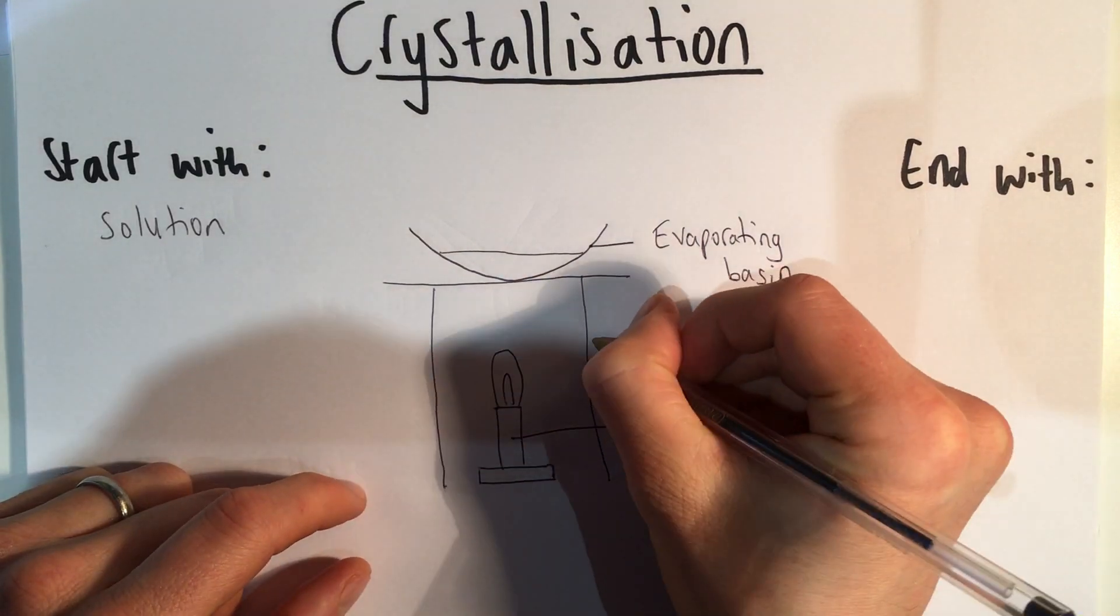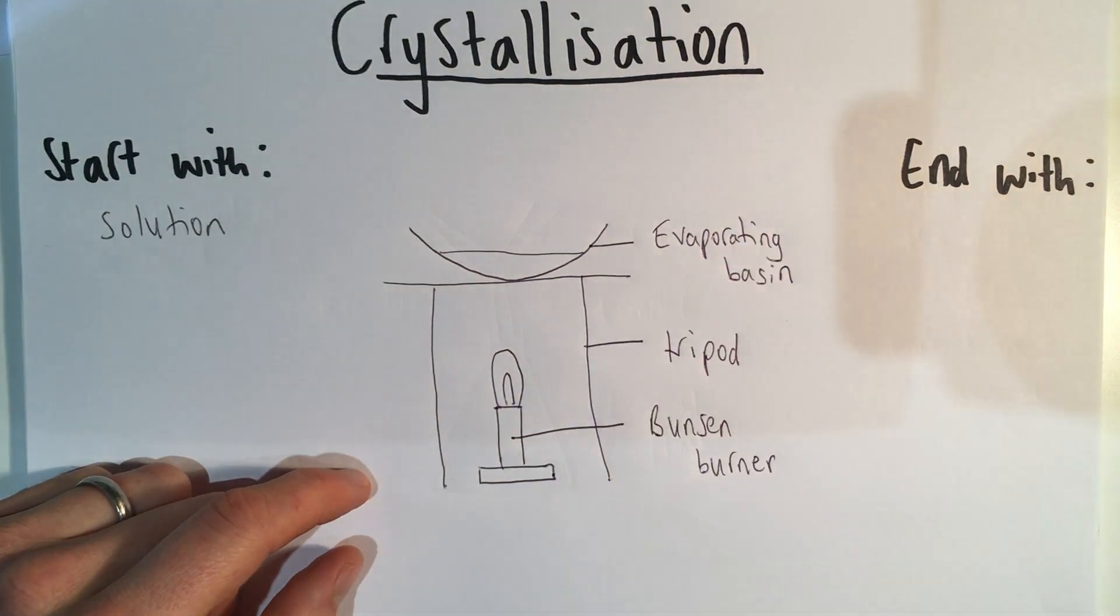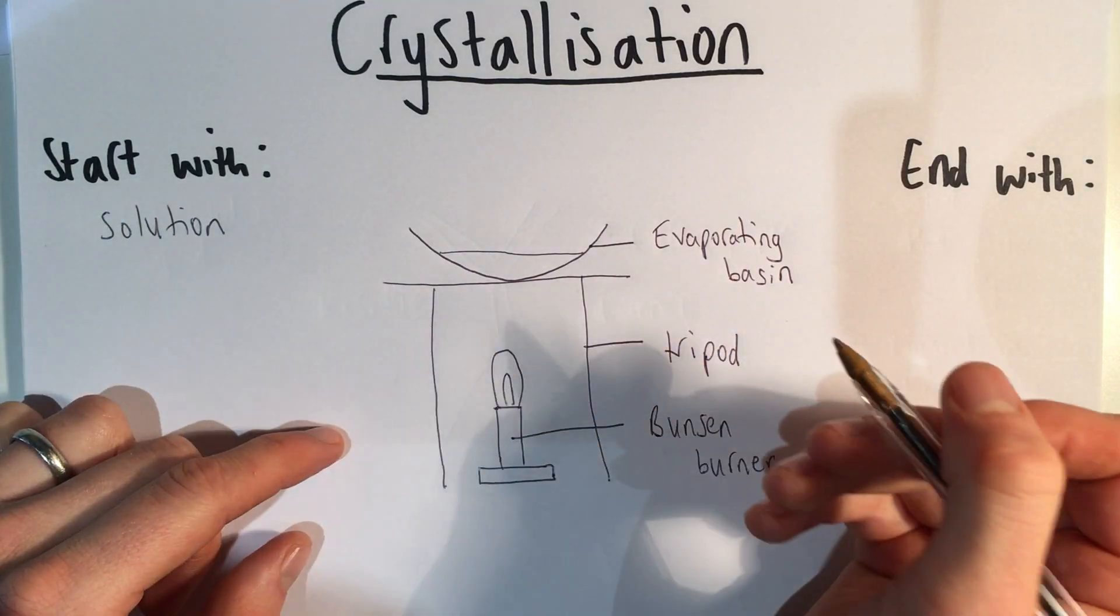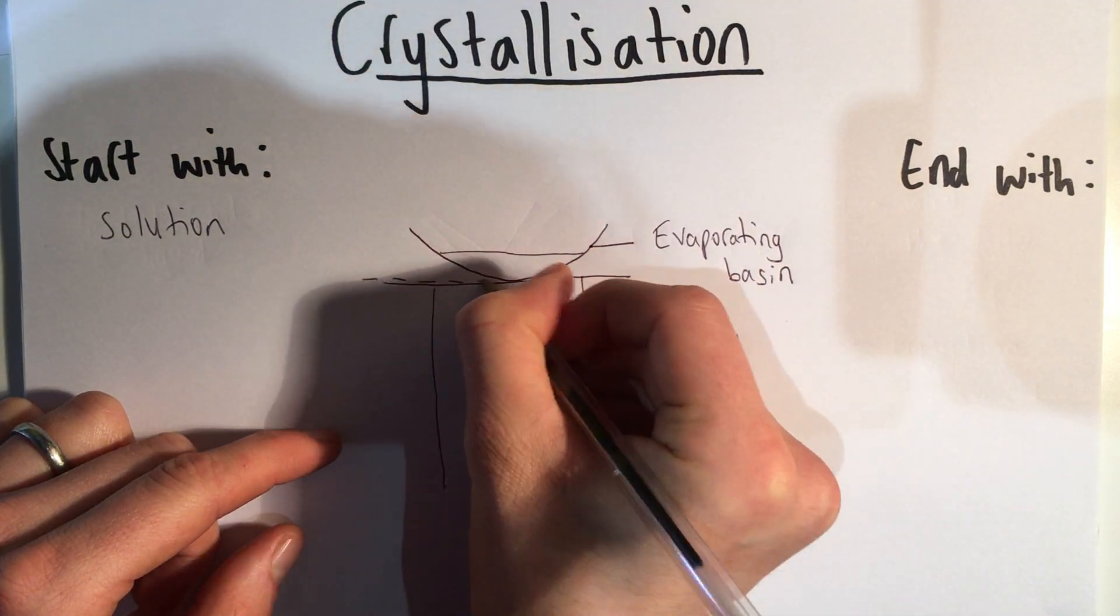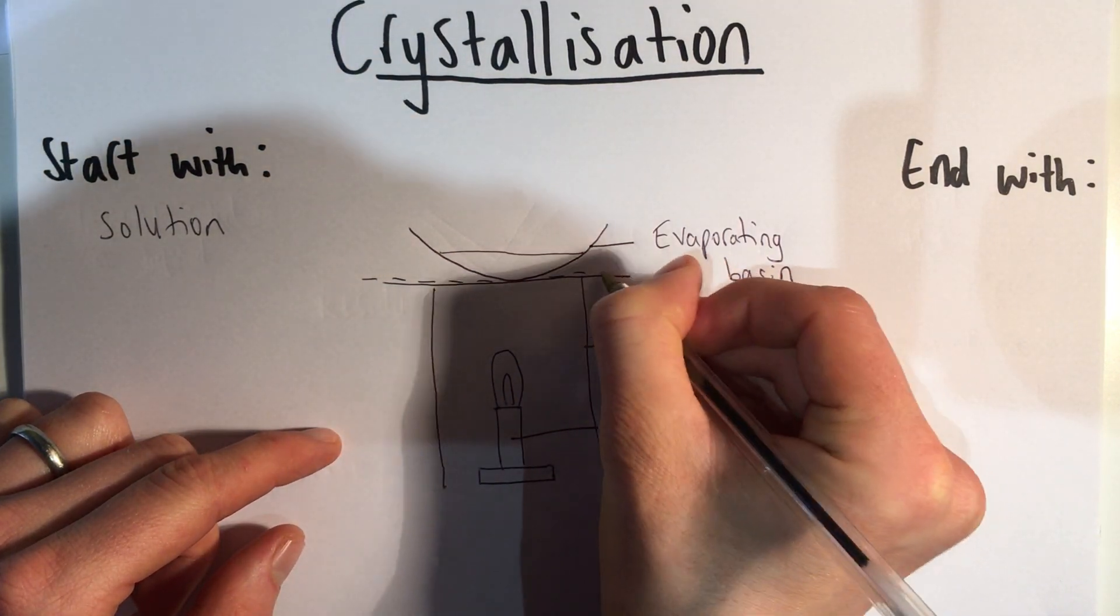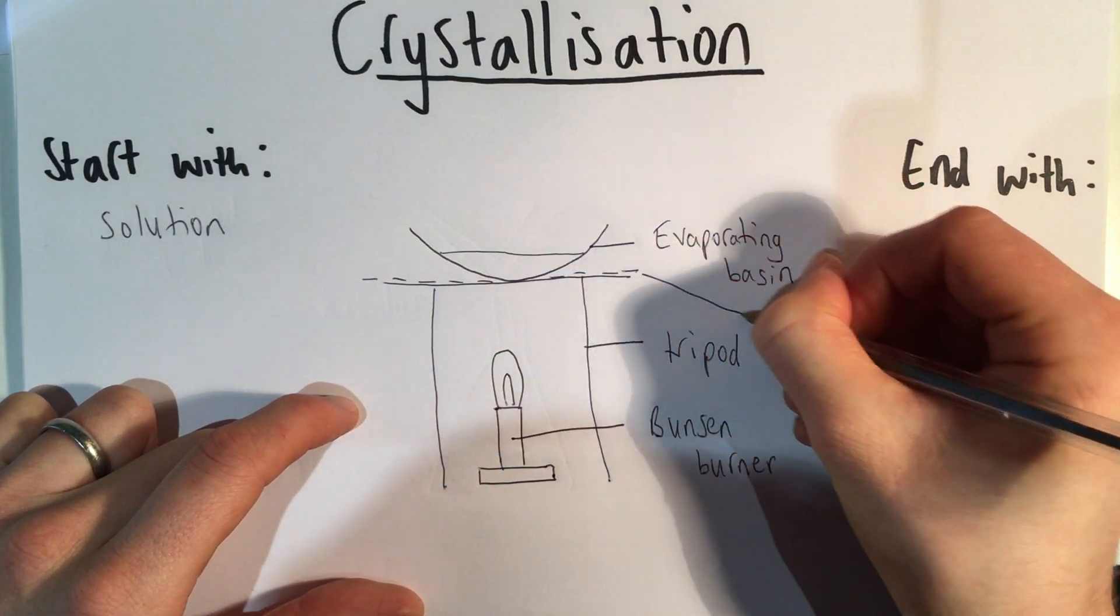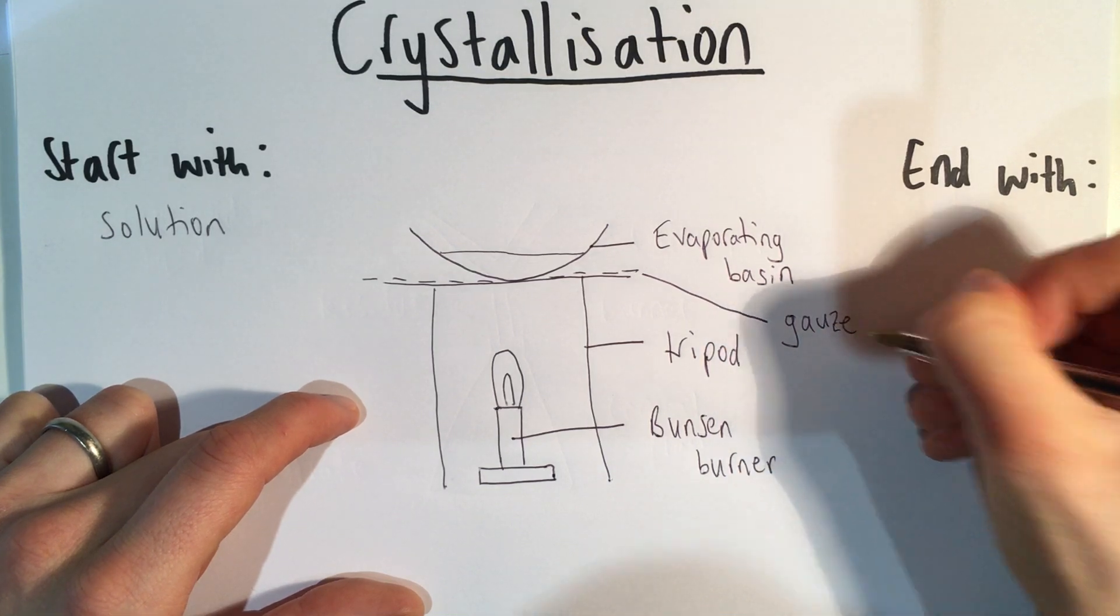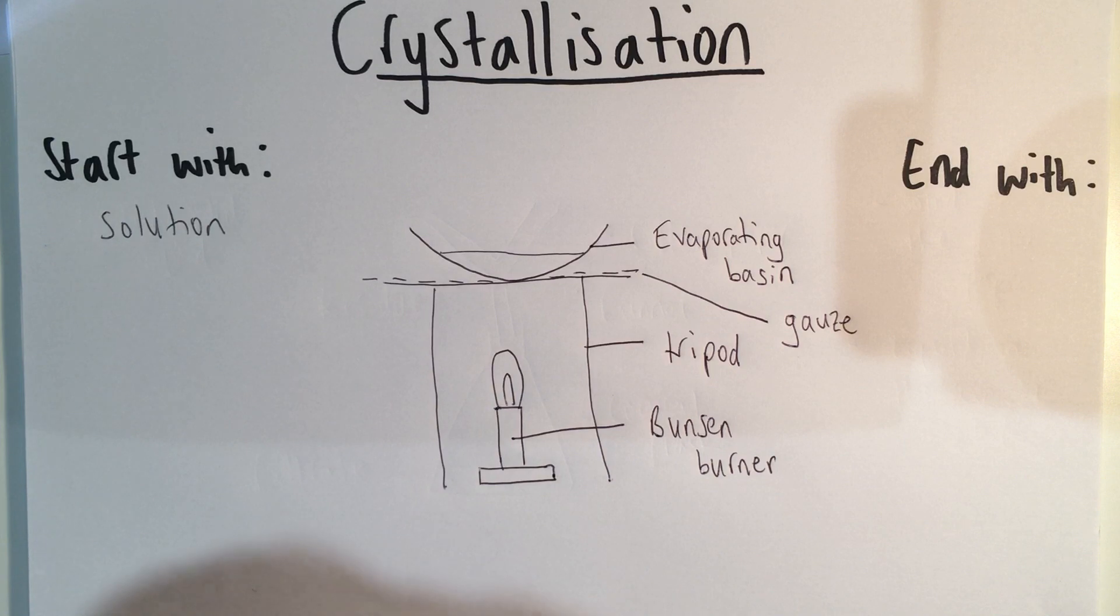I've just shown here the tripod. Between the tripod and the evaporating basin, we would need to have either a gauze or a clay pipe triangle, usually a clay pipe triangle. But just so you can see how I spell gauze, I'm going to write gauze this time: G-A-U-Z-E. And that just holds the evaporating basin on top of the tripod.